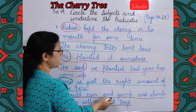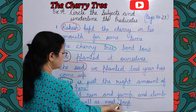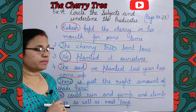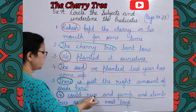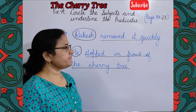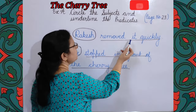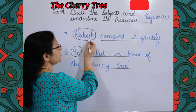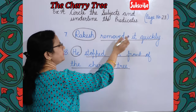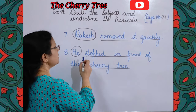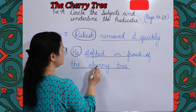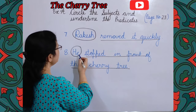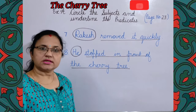Seventh: 'Rakesh removed it quickly.' Subject is Rakesh; rest is predicate. Eighth: 'He stopped in front of the cherry tree.' Subject is 'he'; rest part of the sentence is predicate.